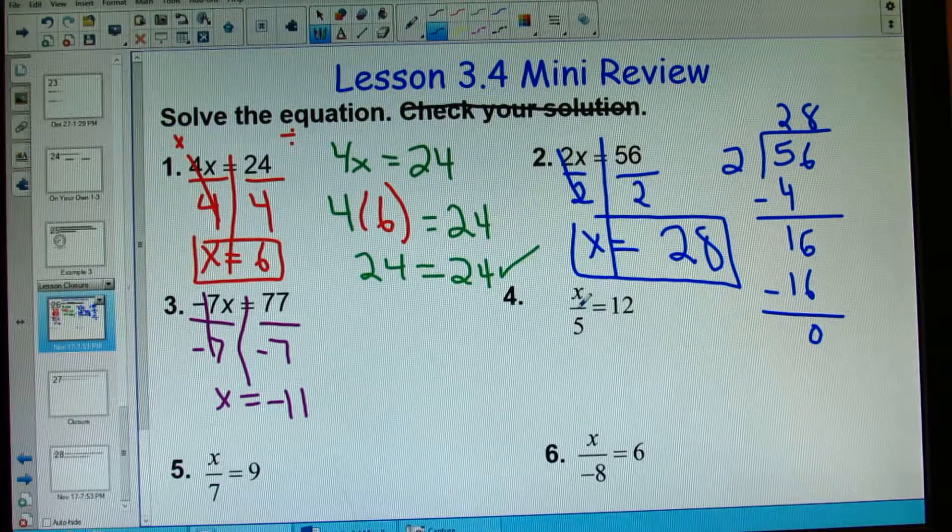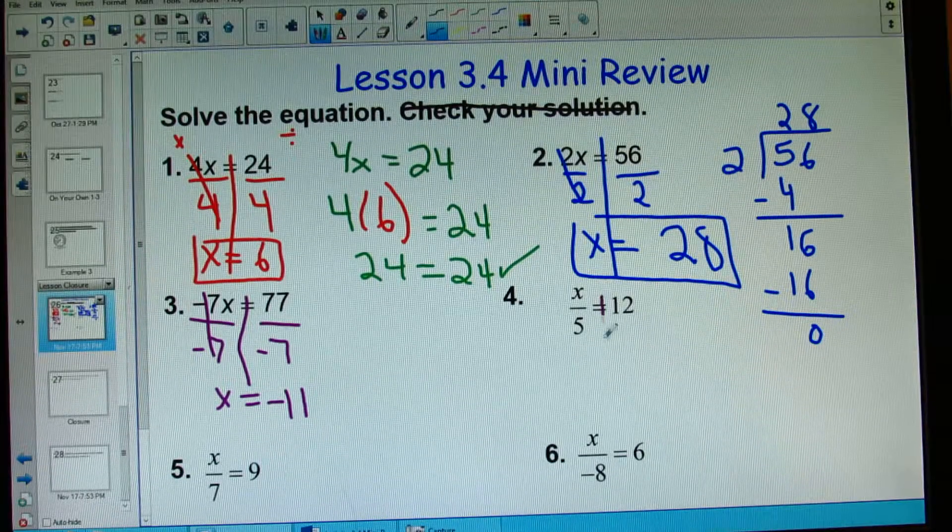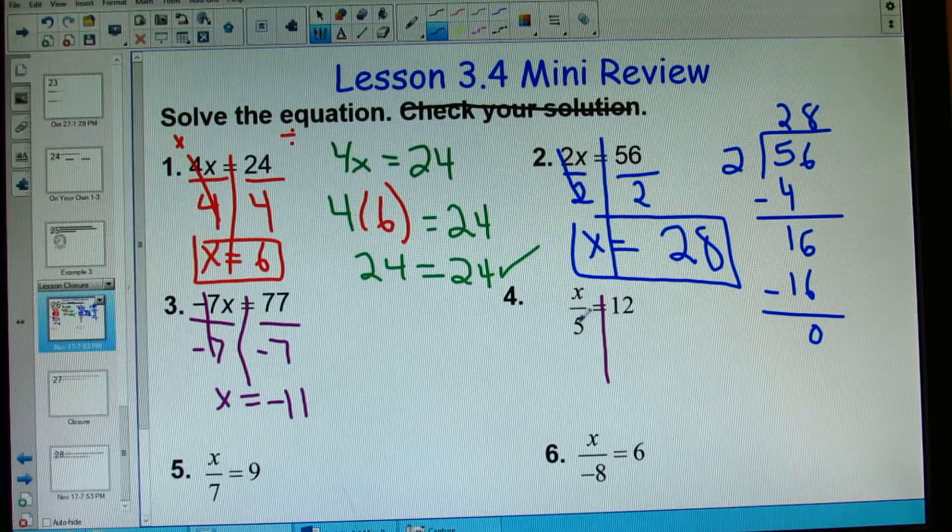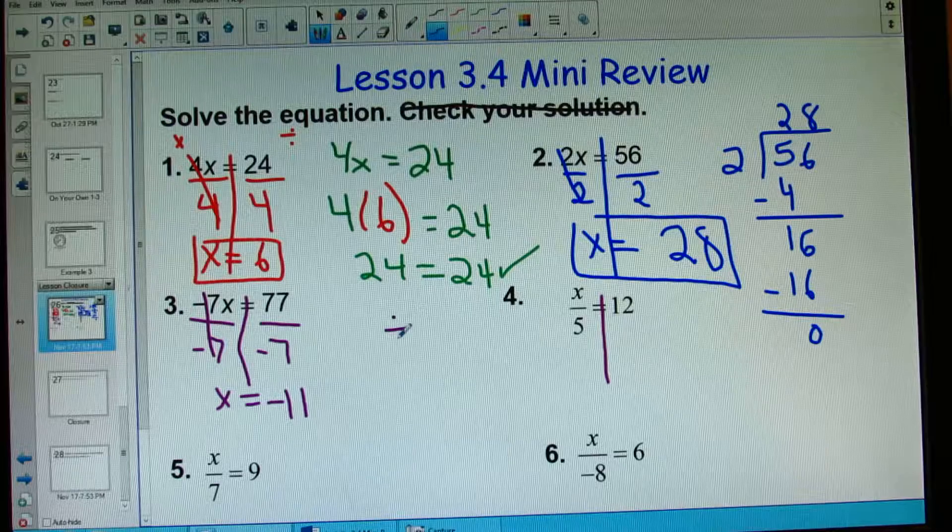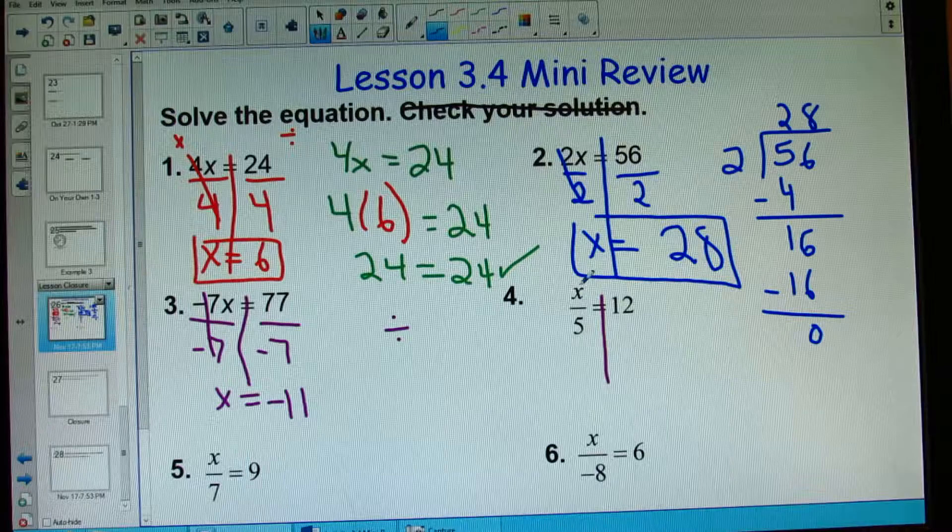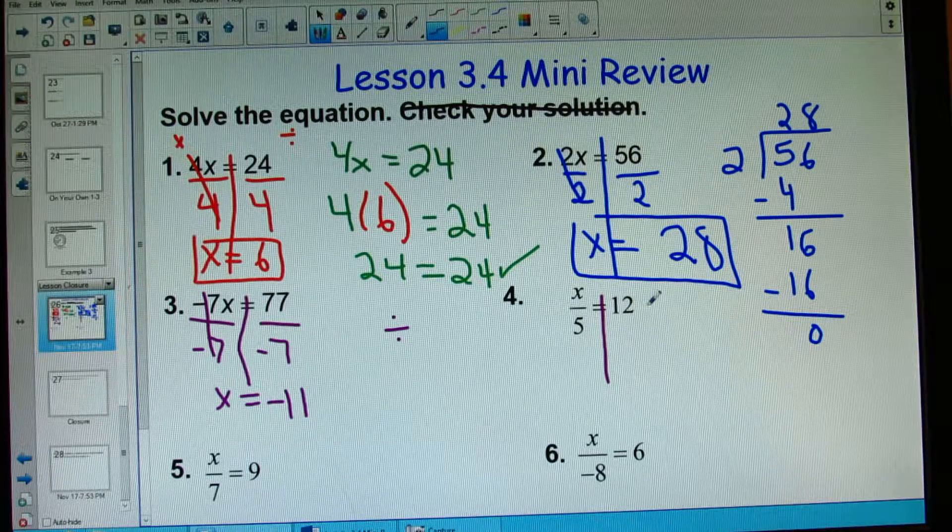Now, number 4 is showing a little bit of a different problem because this is the first problem that involves dividing. We're not in 3rd grade anymore. You're not going to see dividing with a symbol like this. So don't look for this. This fraction bar also means dividing. x divided by 5 equals 12.